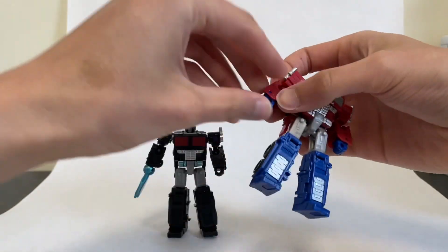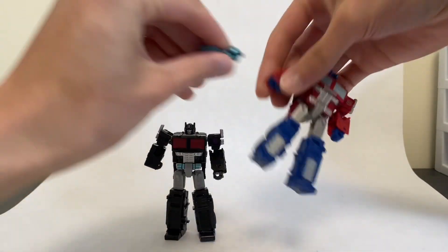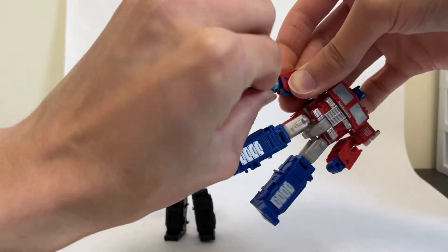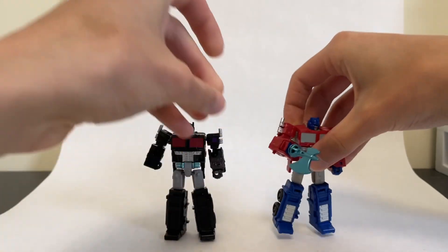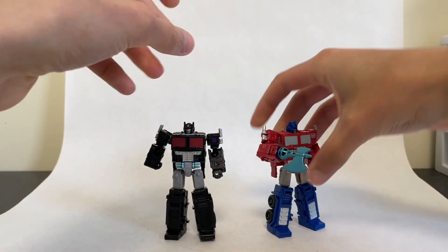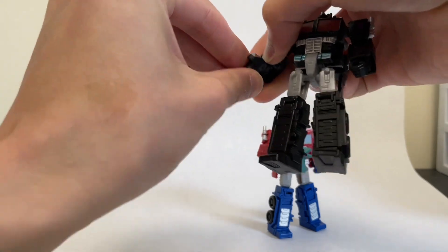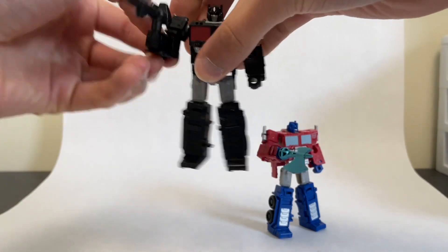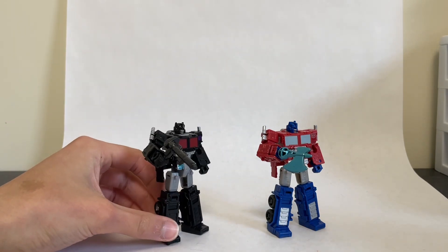And you could, of course, swap weapons between the two if you wanted to. So you could give Optimus a blue Energon Axe. Which, I mean, it works if you want to do that. And you could give Nemesis the ion blaster.